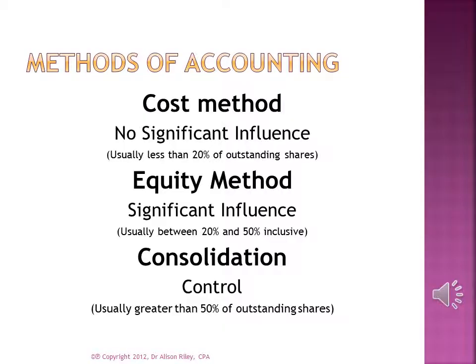There are three methods that investors may choose from to account for their investments: the cost method, the equity method, and consolidation. This doesn't mean that investors can freely choose between the three — each method is designed to be applied to specific investment circumstances.